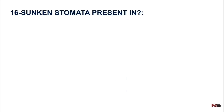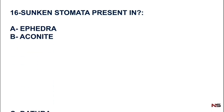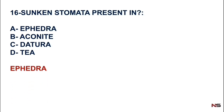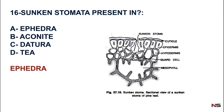Question number 16: Sunken stomata are present in which type of plant? Options are: option A - Ephedra, option B - Aconite, option C - Datura, and option D - Tea. The correct answer is option A, Ephedra. Ephedra is a protoalkaloid or amino alkaloid which has sunken stomata. Sunken stomata reduce water loss from the leaf as compared to normal stomata.